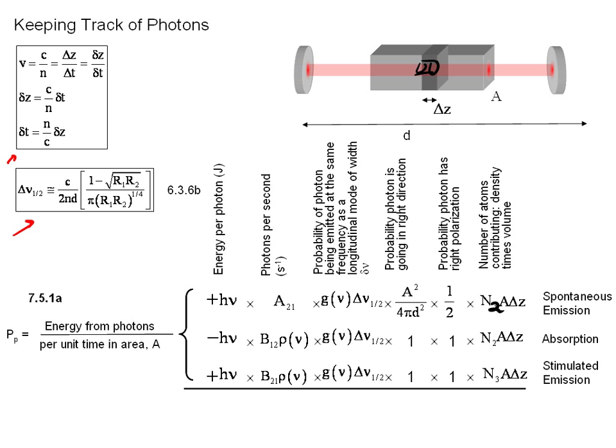We have a very similar-looking equation for the stimulated emission, where we add one quanta or amount of energy h nu at a rate B21 times the energy density. Probability of it being emitted at the right frequency is just the frequency width times the line shape. It's going in the right direction. It has the same polarization. And the volume term is exactly the same. You can sum all of these up and get a differential equation in the book. Then you can do some transformations I'll talk about in just a minute.